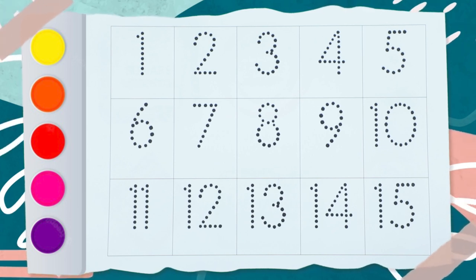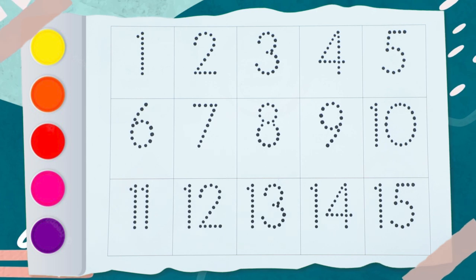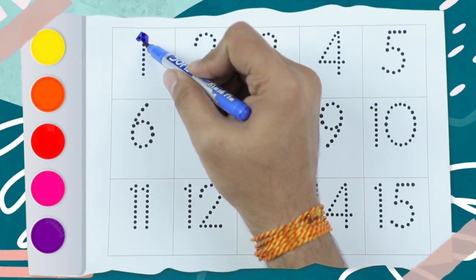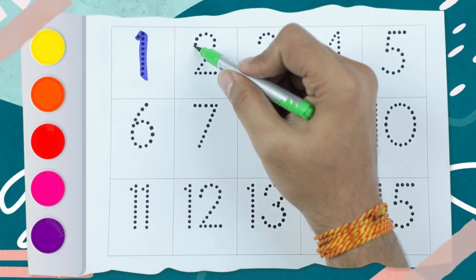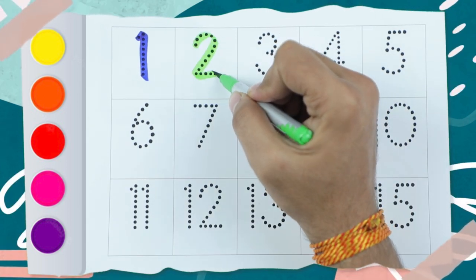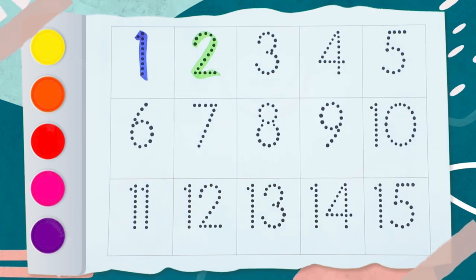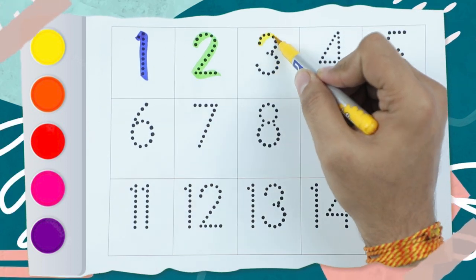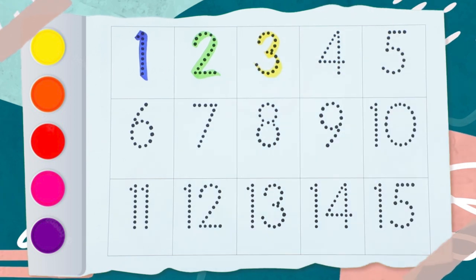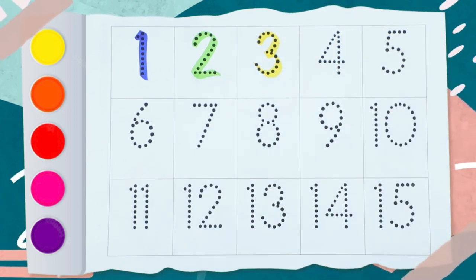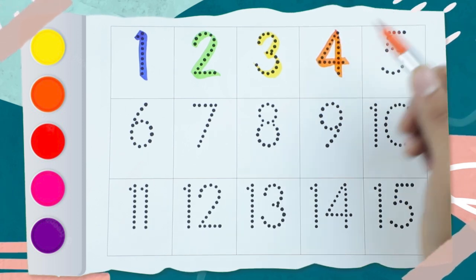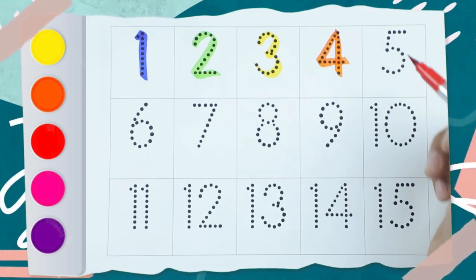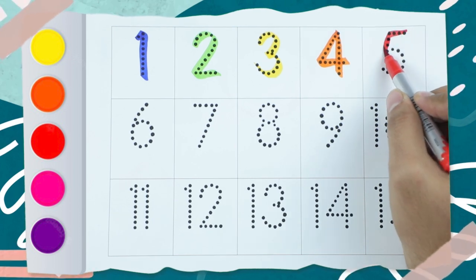10, 11, 12, 13, 14, 15. So number 1 is blue color. Number 2 is green color. Number 3 is yellow color. 1, 2, and 3. Now number 4 — 4 is orange color. And now red color.